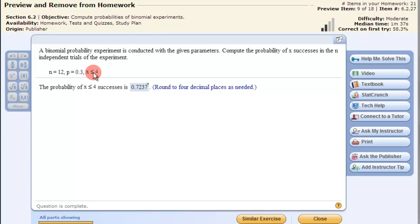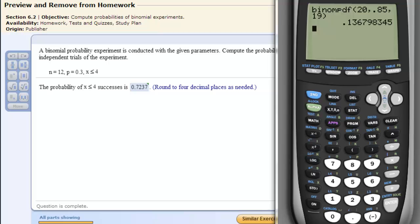So it's cumulative, meaning 0, 1, 2, 3, or 4 successes that you would want to add up. So we do a similar thing